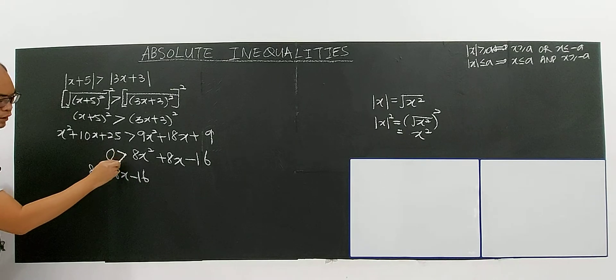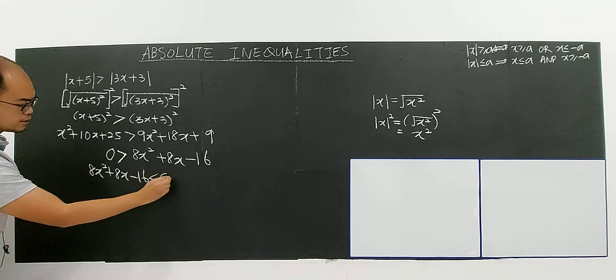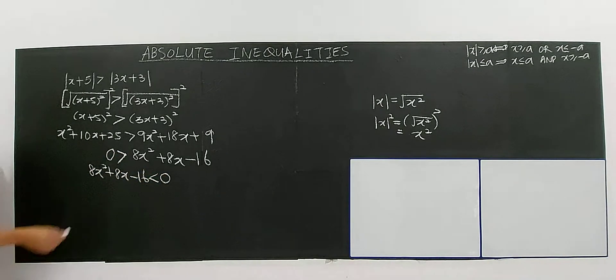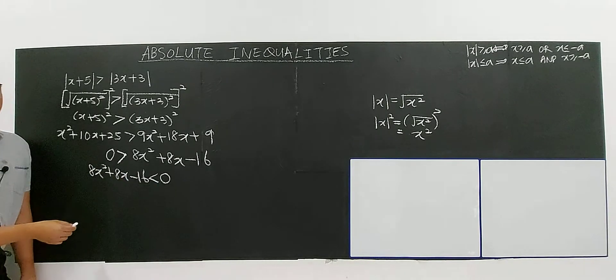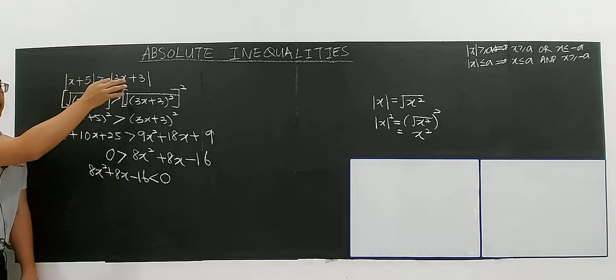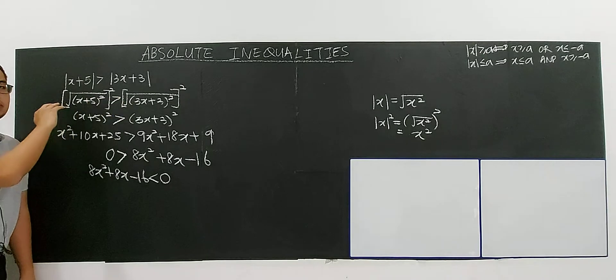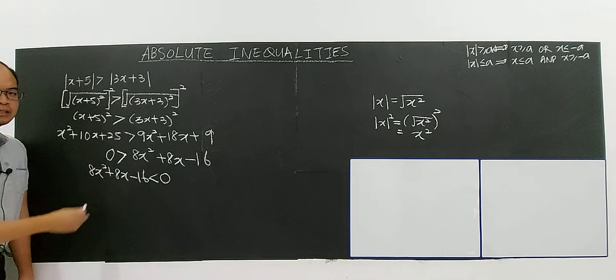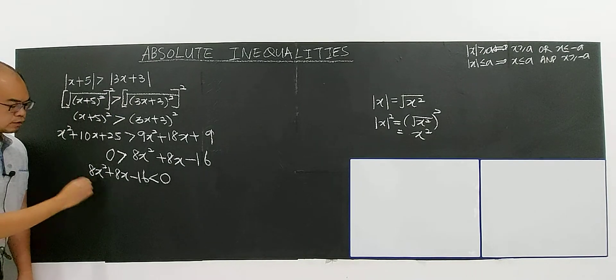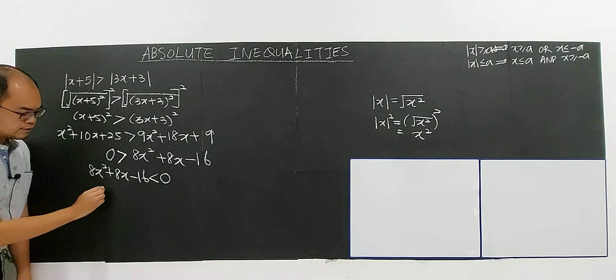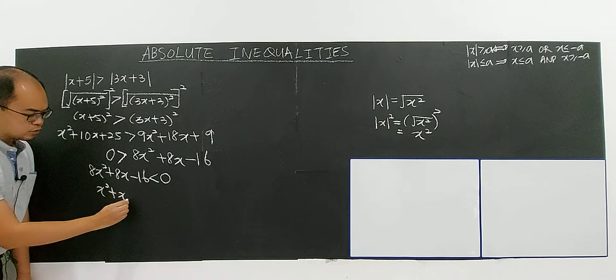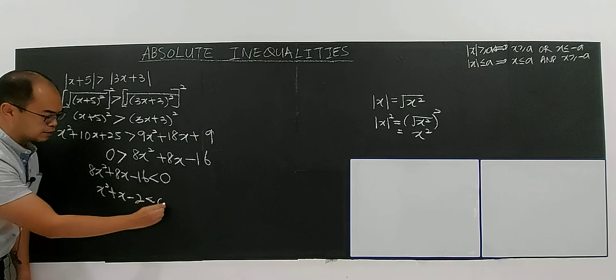Can you see the arrow pointing here? So it's pointing this way, less than zero. So it becomes a quadratic inequality. Very simple for if you have modulus both sides. You just do squaring both sides and you will get a quadratic inequality. Then you divide everything by 8. Simplify. It will become x square plus x minus 2 less than zero.